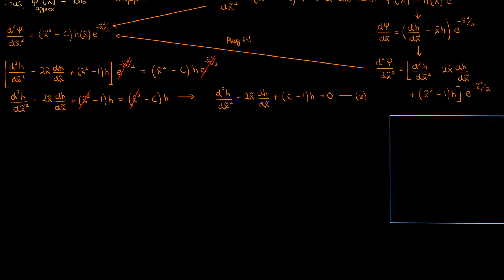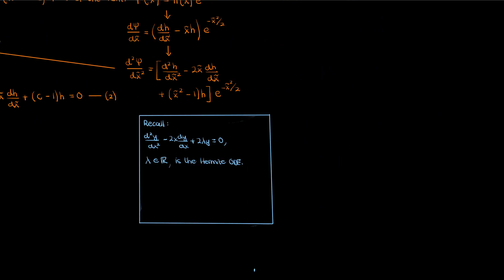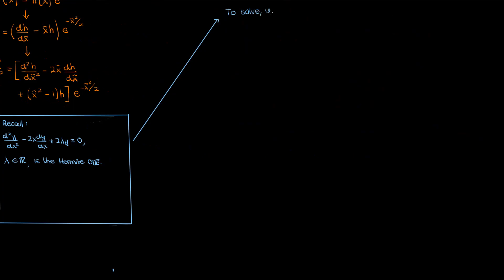Let me explain further. Recall that the equation d²y/dx² - 2x dy/dx + 2λy = 0, where λ is some real constant, is called the Hermite differential equation.